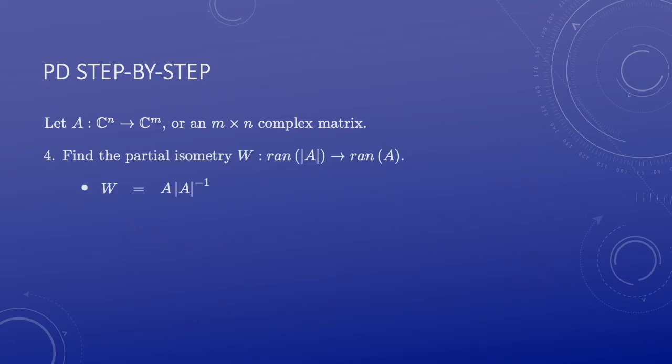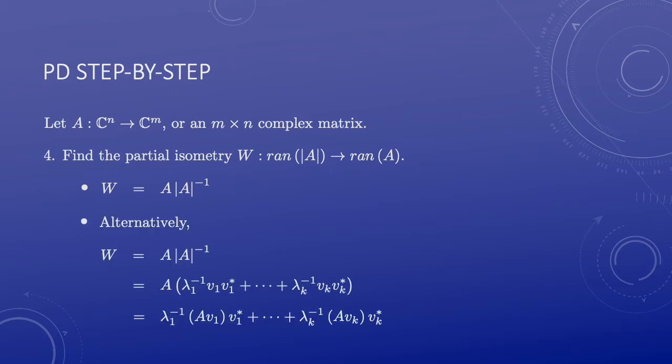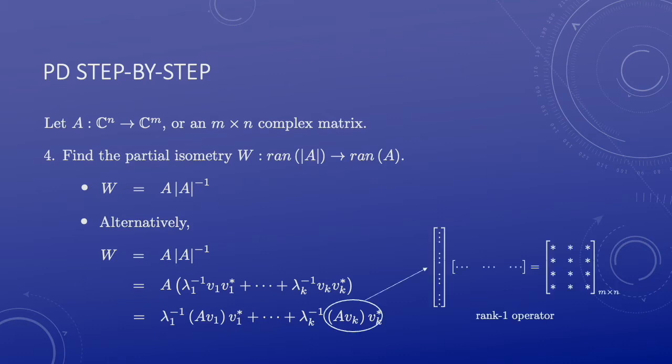Next, the partial isometry W is given by A times the pseudo-inverse of the polar. Alternatively, by inserting the formula for the pseudo-inverse, W is written as a weighted sum of rank-1 operators, but not rank-1 projections. The reason is that each A·V is a column vector of length M, and V star is a row vector of length N, so the rank-1 operator is in fact an M-by-N matrix.